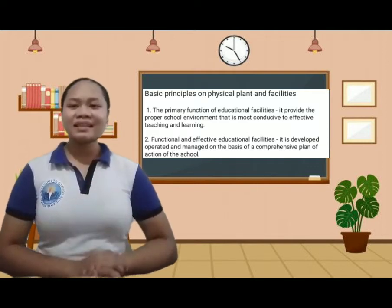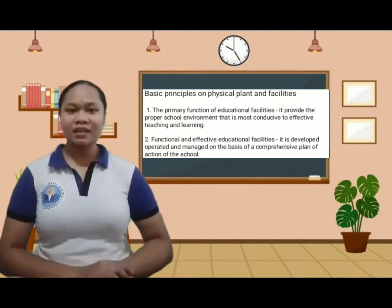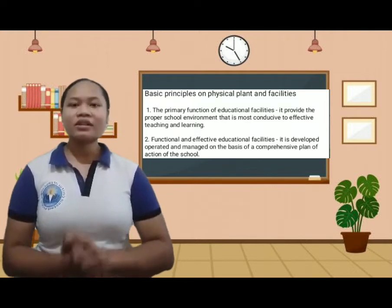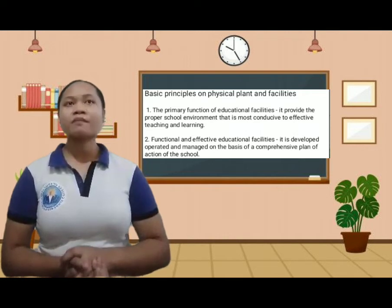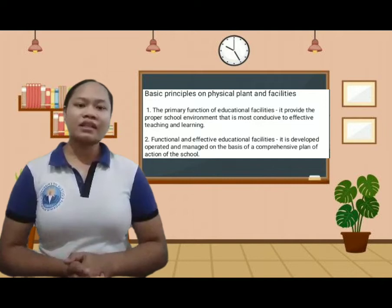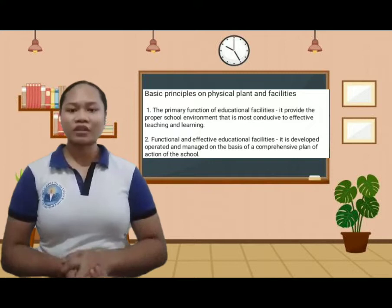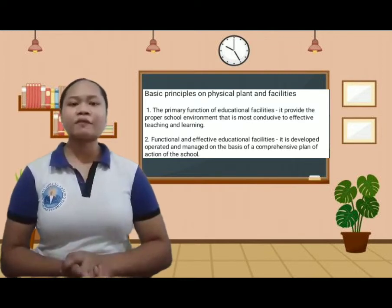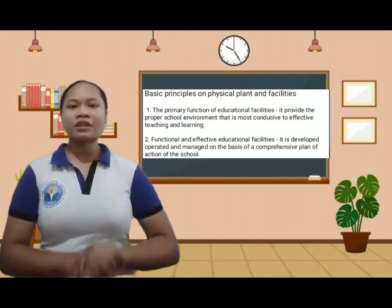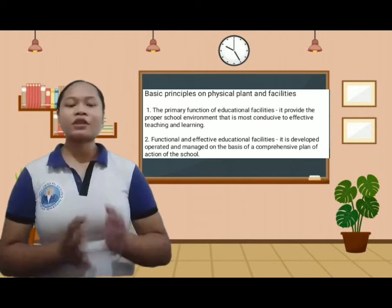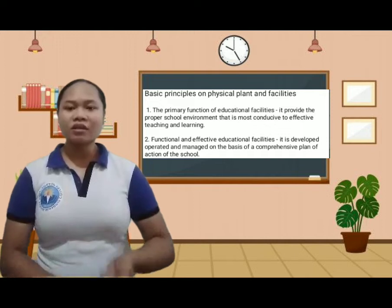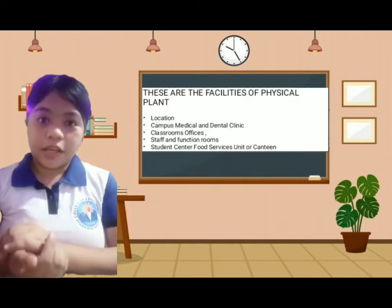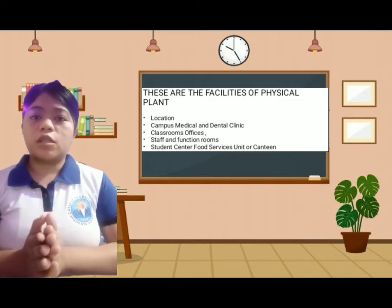The second principle is that functional and effective educational facilities are developed, operated, and managed on the basis of a comprehensive plan of action of the school. It will strive to support the academic mission of the university in an efficient and professional manner to ensure building safety and comfort. The physical plant is the necessary infrastructure used in the support and maintenance of a given facility, including renovation of location, floor space, equipment, and rooms.